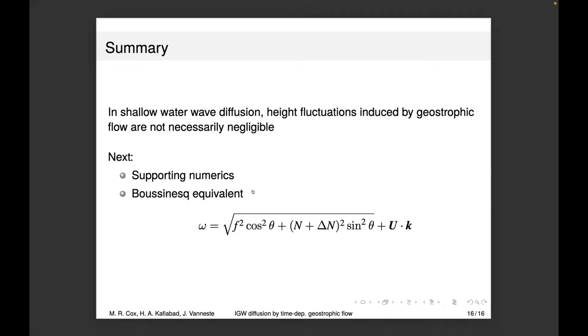What I'd like to do next is support this with some numerics and ray tracing. You can find an analytic solution to the diffusion equation for small theta, and I'd like to verify this with ray tracing for the height perturbation case. I started looking at the Boussinesq equivalent—in the 3D Boussinesq system, instead of height fluctuations induced by the geostrophic flow, we have stratification changes, which will give another term in the diffusivity. I think that's me done. Any questions? Thanks.